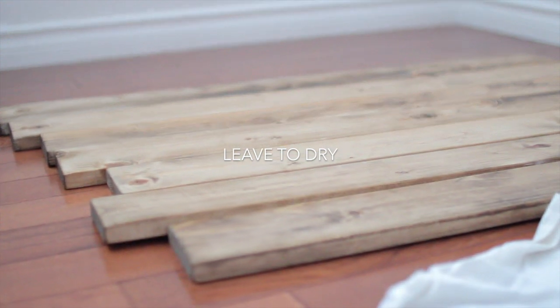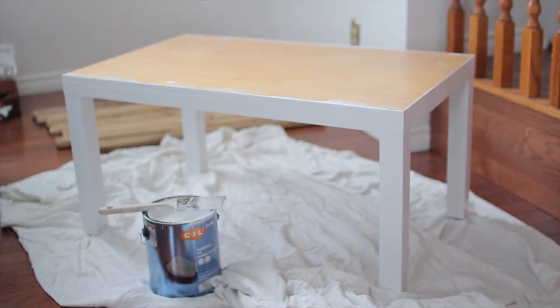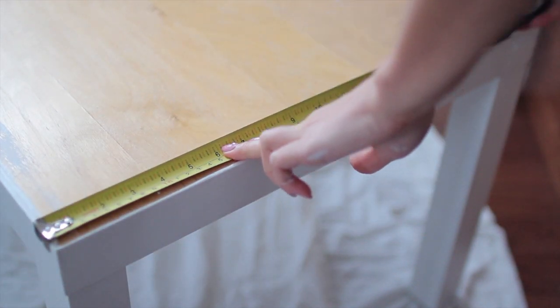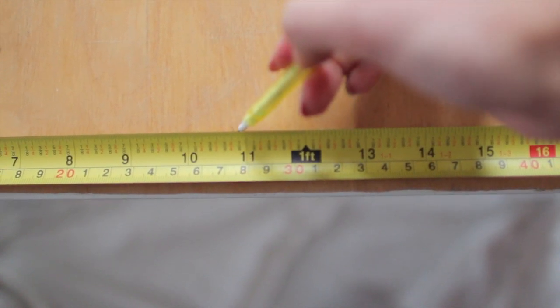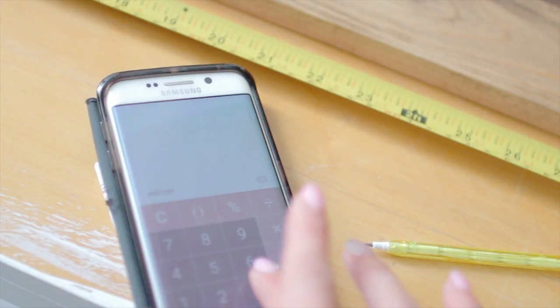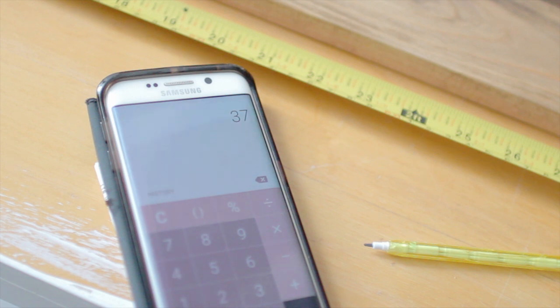After your one-by-fours and your table are dry, we are going to put that together. First, we have to measure the width of the table and mark down where the middle is so that we can first put our one-by-four on there. A calculator is not necessary for this, but it's good for your visuals here.